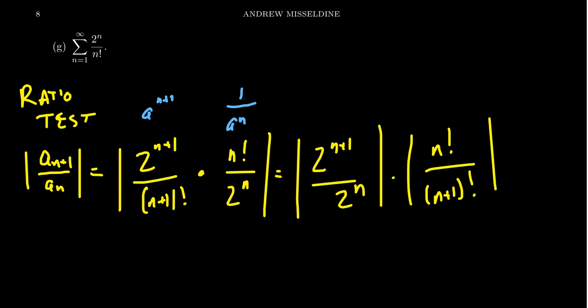And so now we want to simplify these fractions using their factorizations. Now, 2 to the n plus 1 factors as 2 to the n times 2 to the 1st. So 2 to the n's cancel, we're left with a 2, which I'm going to record here. Then with the n factorial and the n plus 1 factorial, factorials have a very nice factorization principle. You're going to get n plus 1 times n factorial, for which the n factorials cancel and we're left with an n plus 1 on the denominator.